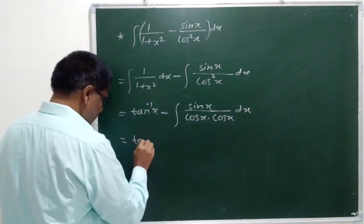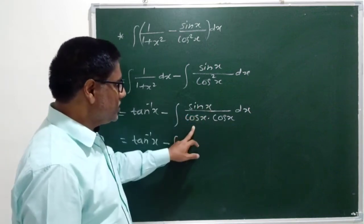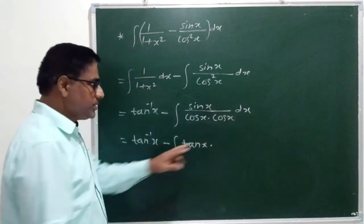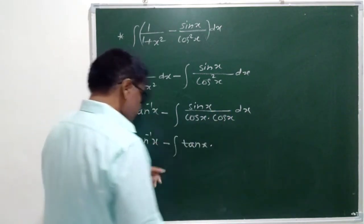Cos x into cos x dx. This is equal to tan inverse x minus sin x upon cos x is tan x. And one more cos x will be left out, 1 by cos x is sec x.